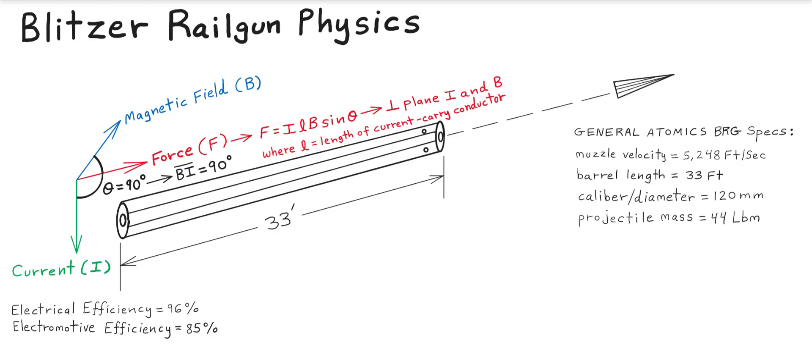The General Atomics Blitzer Railgun specifications: a muzzle velocity of 5,248 feet per second, barrel length of 33 feet, and a caliber diameter of 120 millimeters. Converting that to standard inches by dividing by 25.4 millimeters per inch gives a 0.472 caliber or 4.72-inch diameter projectile. The projectile mass being launched is 44 pounds.